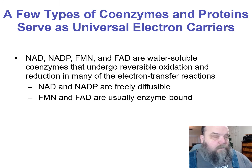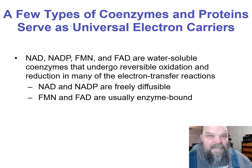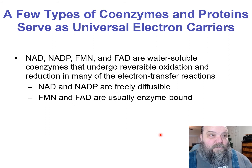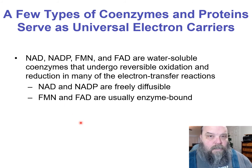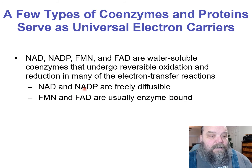When you look at the electrons that are going to be captured and harvested throughout cellular respiration, they need to be moved around using what I refer to as electron carriers. Interestingly, these electron carriers have been evolutionarily conserved — you'll find versions of them throughout all living cells. NAD, NADP, FMN, FAD are the key ones. FMN and FAD are usually enzyme-bound; NAD and NADP are freely diffusible — soluble, moving through the cytoplasm or aqueous solution within any organelle.